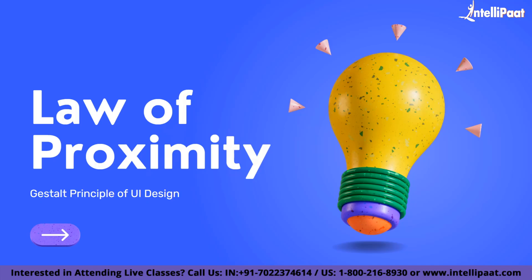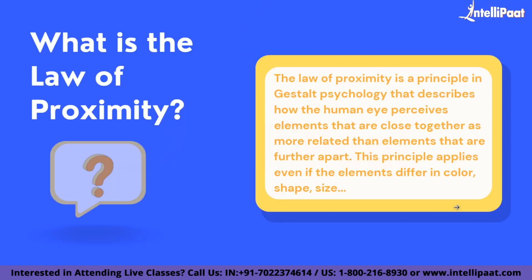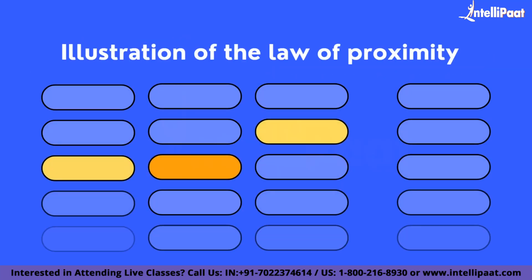What is the Law of Proximity? The Law of Proximity is a principle in Gestalt psychology that describes how the human eye perceives connections between visual elements. Elements that are close to each other are perceived to be related, compared with elements that are separate from each other. This principle applies even if the elements differ in color, shape, size, or other categories. The German word 'Gestalt' literally means the way a thing has been placed or put together.